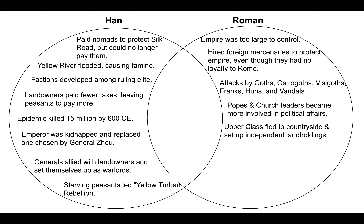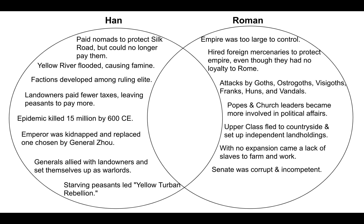With people fleeing to the cities to escape from invaders, you've got overpopulation in the cities, which led to starvation and disease. The upper class then are going to flee from the cities out into the countryside and set up their own little farms and protect themselves. Because the western half of the empire stopped expanding, that meant they weren't bringing in slaves anymore to do a lot of the farming and the work, so that weakened the western part of the Roman Empire.